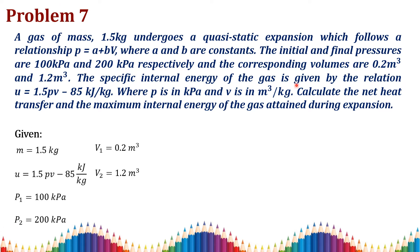The specific internal energy is given by u = 1.5pv − 85 kJ/kg, where the lowercase v is specific volume in m³/kg, and p is in kPa. Note that the problem gives total volume in the pressure-volume data but uses specific volume in the internal energy equation, so we must carefully convert all values to either specific volume or total volume before proceeding. We need to find the net heat transfer using the first law of thermodynamics and also the maximum internal energy attained during expansion.